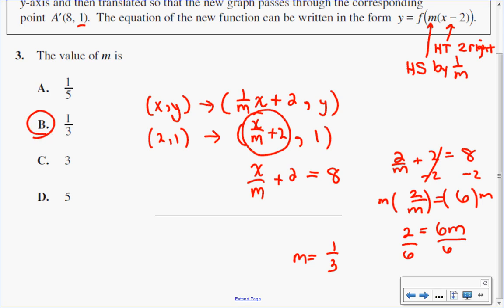Alternatively, you could just substitute all of the values of the multiple choice options for m into that mapping notation and see which one works.